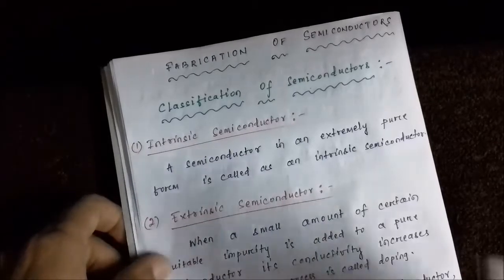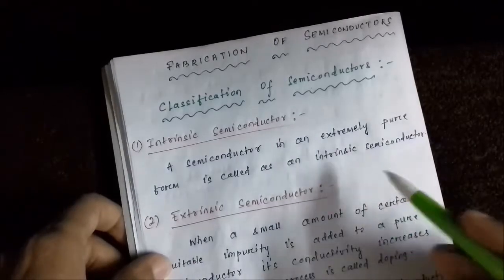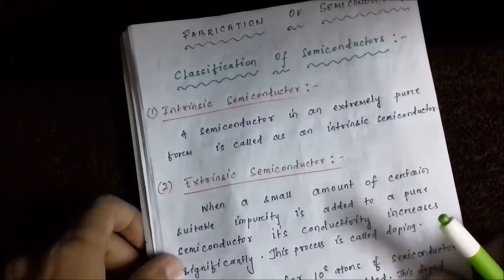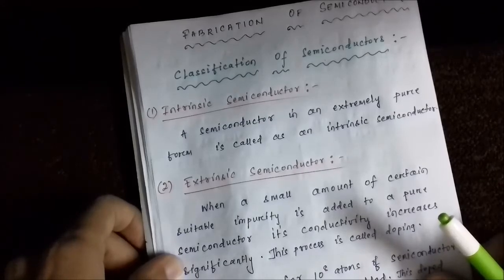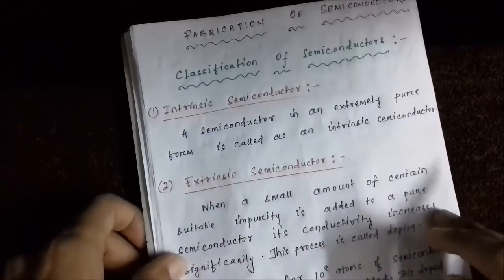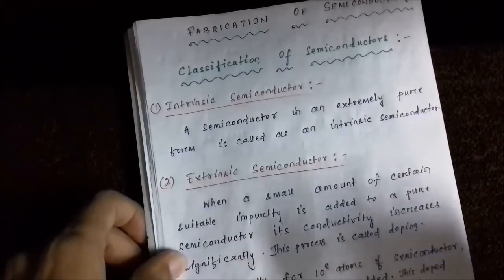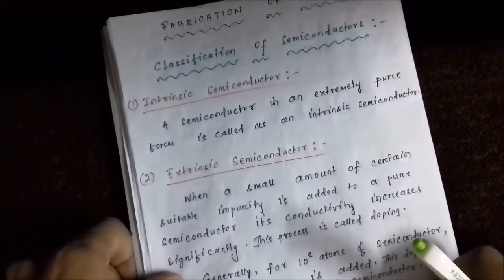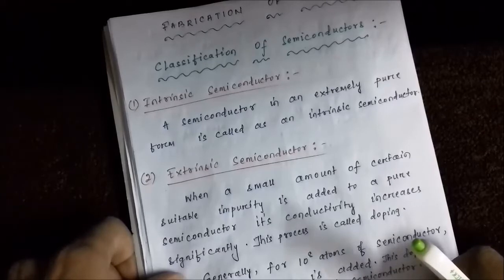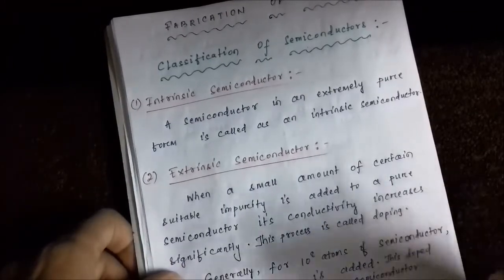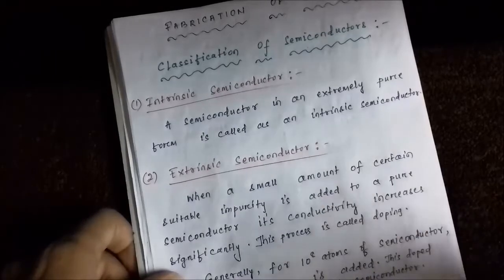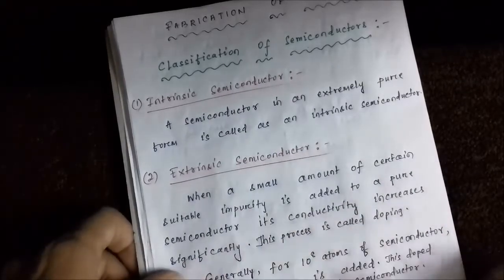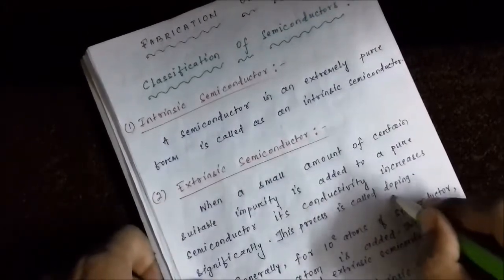In its absolute state, its true state — a semiconductor in its true state is called an intrinsic semiconductor. Next, we have the extrinsic semiconductor. It is found that when some amount of a specific impurity substance or a particular impurity chemical substance is added to a pure semiconductor or intrinsic semiconductor, its conductivity increases or changes significantly. This process of addition of impurity to increase the conductivity of the semiconductor is called doping.